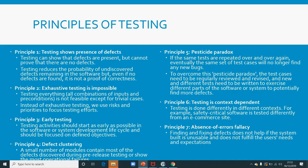Principle number one says that testing shows the presence of defects. It is very, very important that testing does not say that there is no defect. It only shows that there is a defect in the application. What you are trying to do is reduce the probability of uncovered defects remaining in the software, giving a sense of confidence that the application has increased quality.